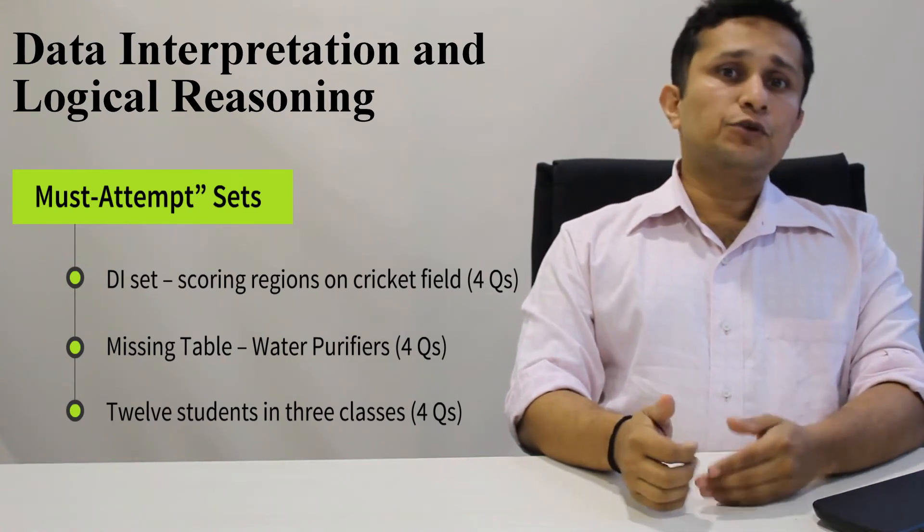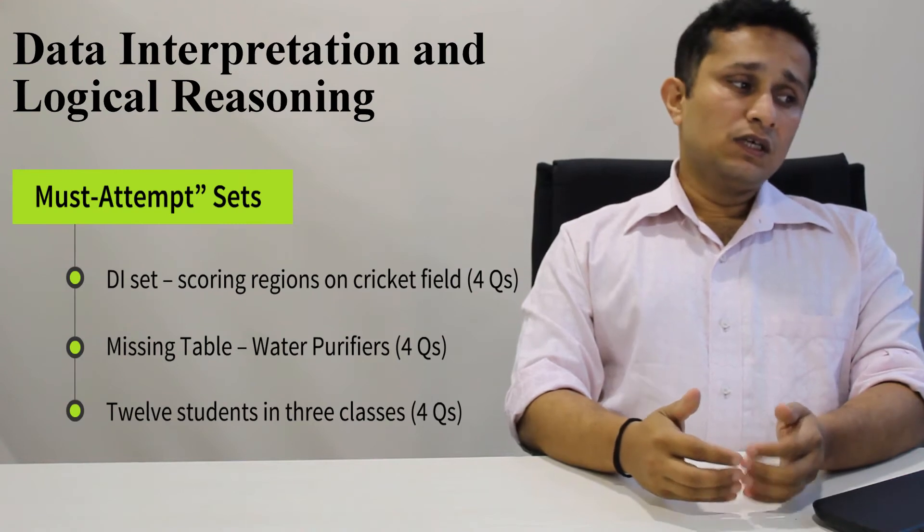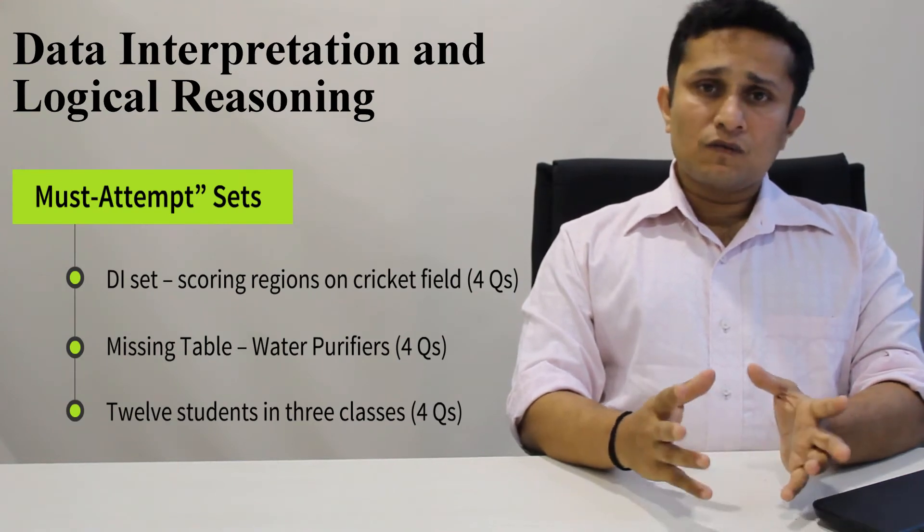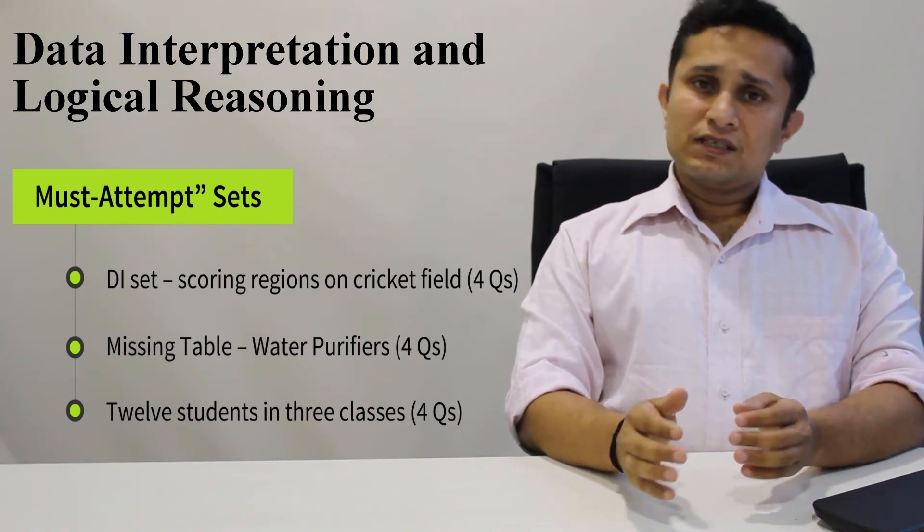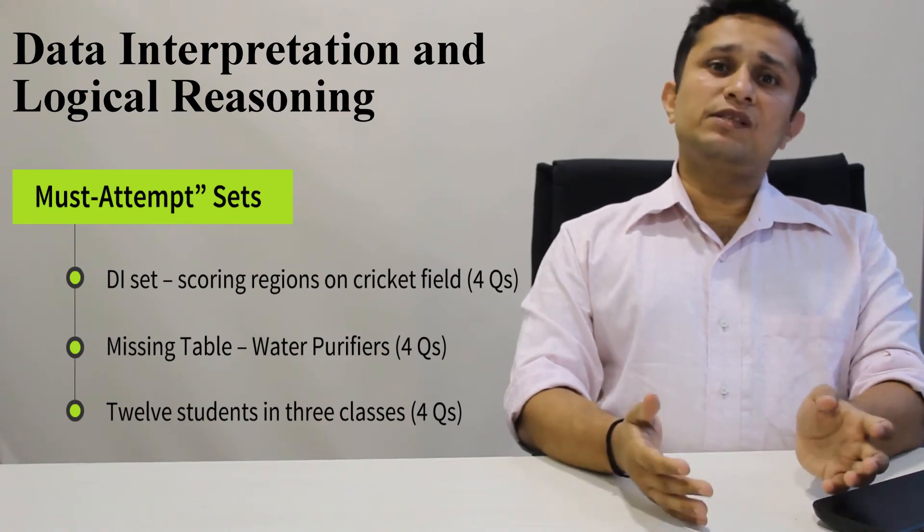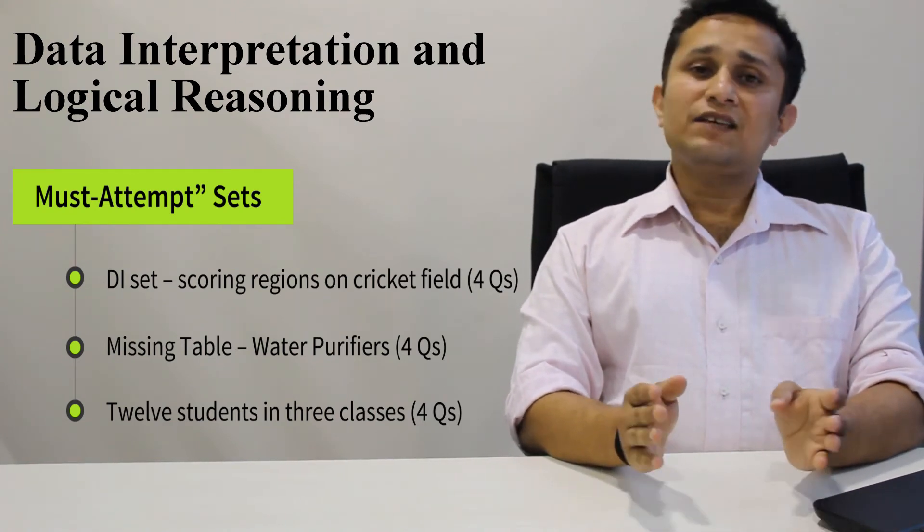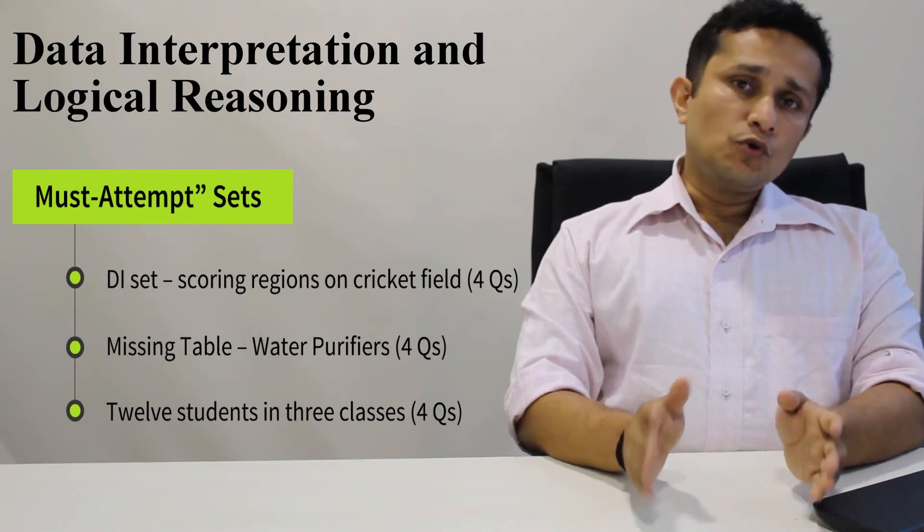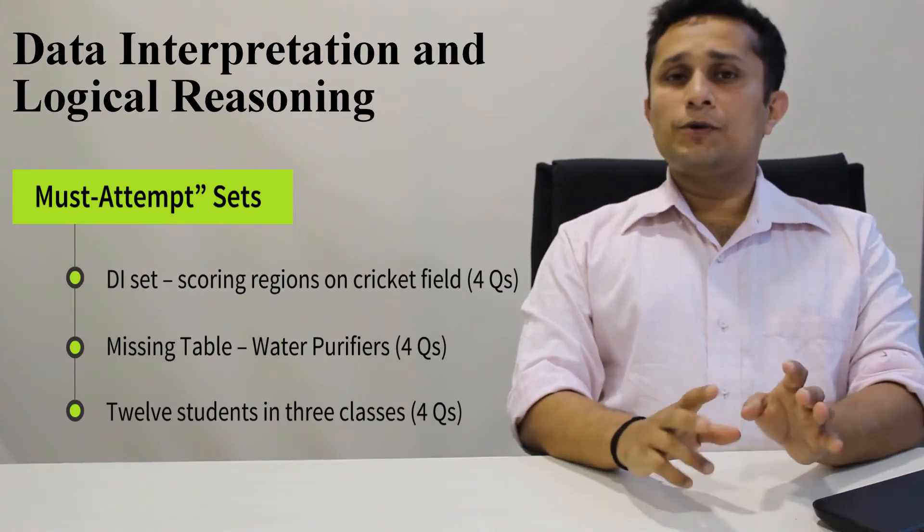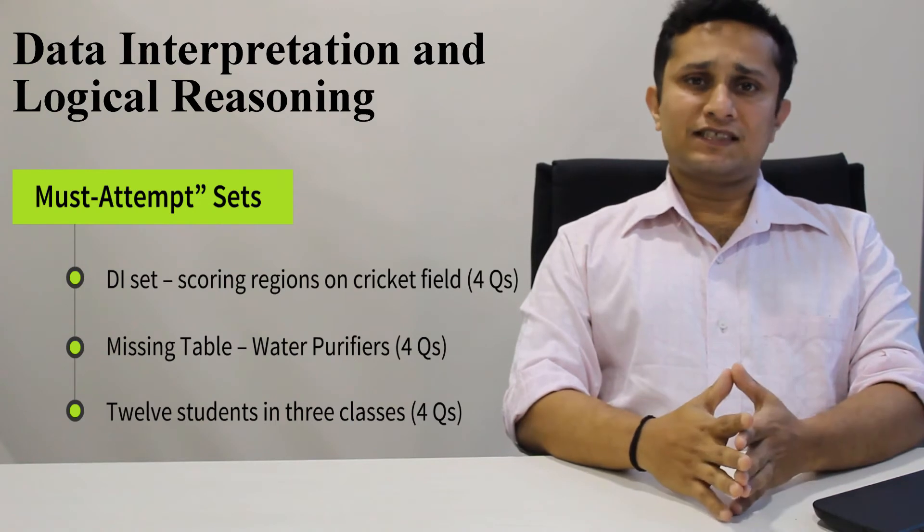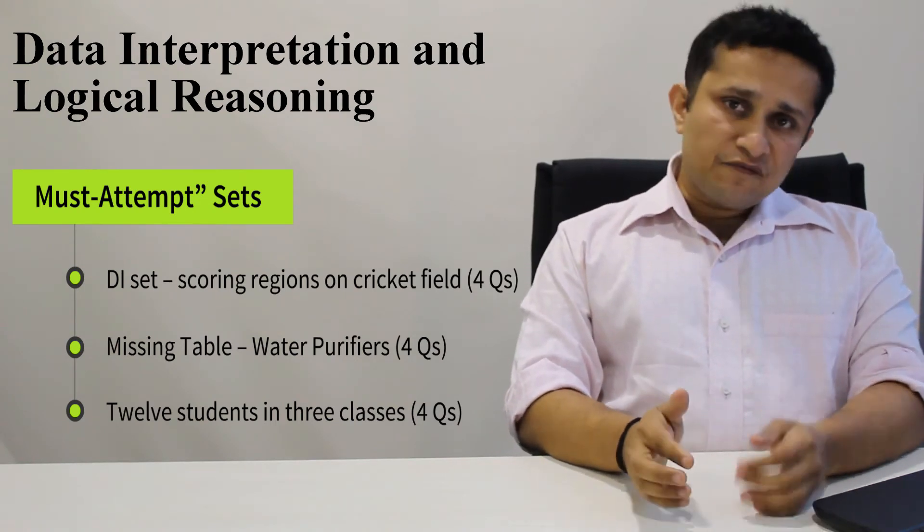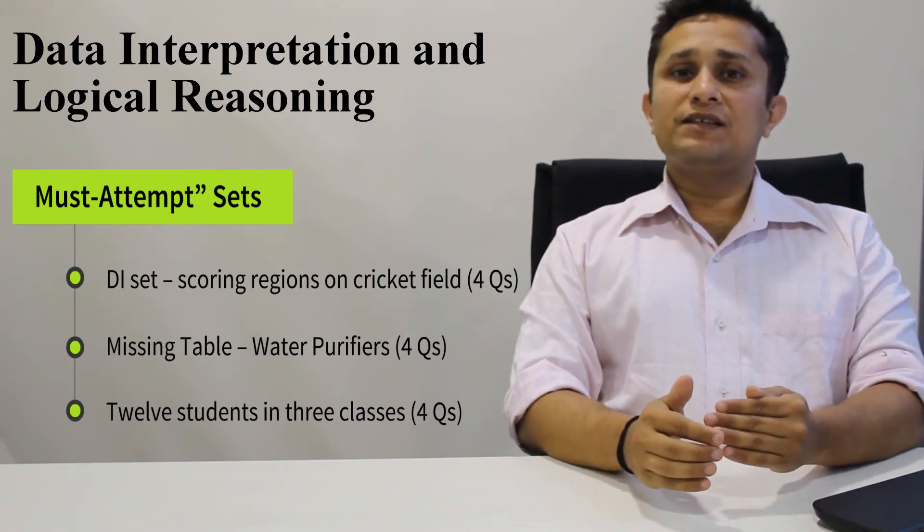A third set which should have been attempted was the one where you had a missing table on water purifiers. This was again any missing table set. Typically if you look at the questions and if they are not conditional, you know that the table is more or less going to get fit, and try and solve that set. So these 3 were definitely the sets that you should have attempted in this mock.